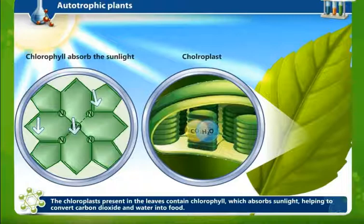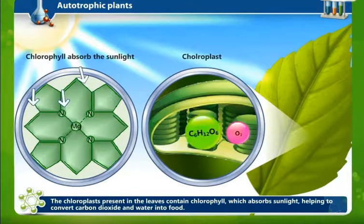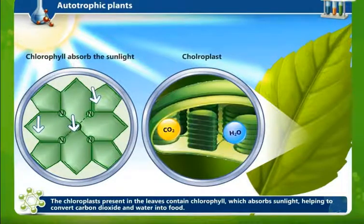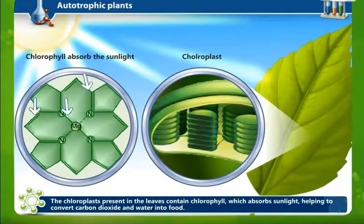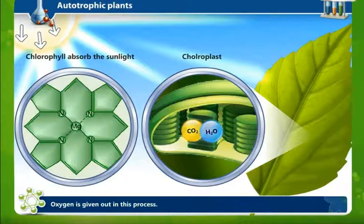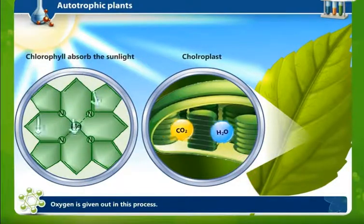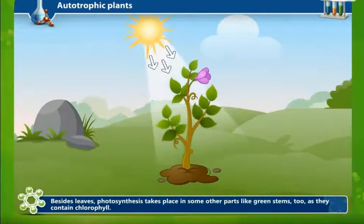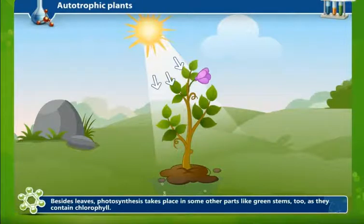Chlorophyll only helps the reaction — it helps photosynthesis take place without itself undergoing any change. It is due to chlorophyll that the carbon dioxide and water taken in by plants are converted into glucose, and oxygen gas is released. Besides leaves, photosynthesis also takes place in green stems, as they too contain chlorophyll.